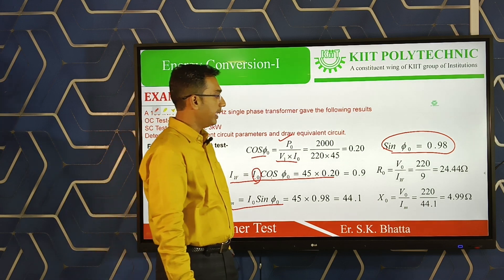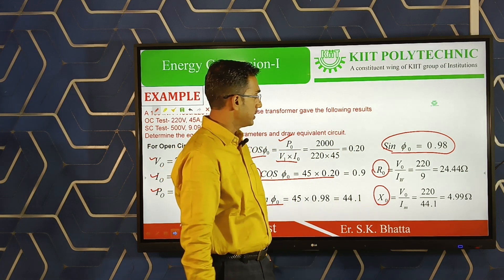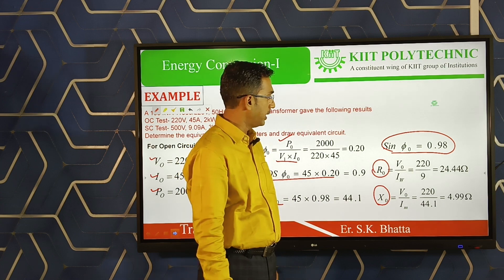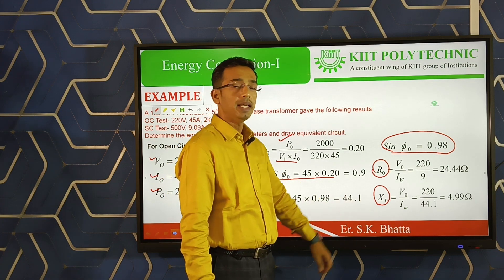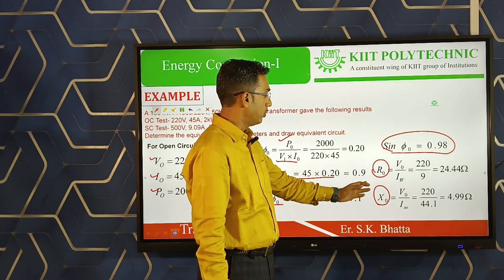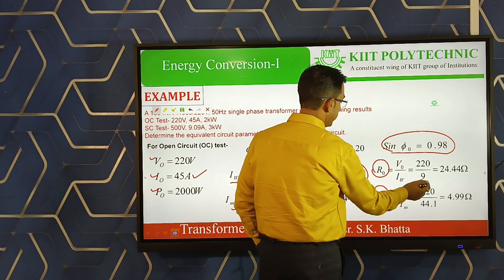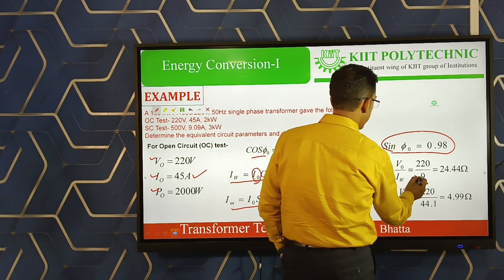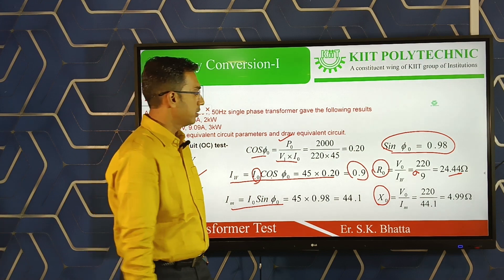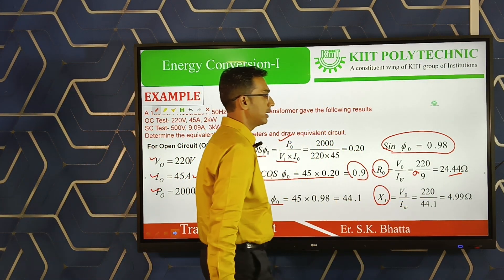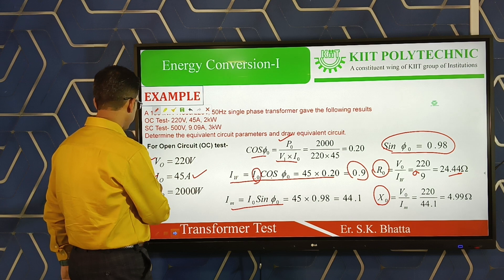With Iw and Im calculated, we find the shunt parameters: R₀ = V₀ / Iw = 220 / 9 = 244.4 Ω (approximately). X₀ = V₀ / Im = 220 / 44.1 = 4.99 Ω, approximately 5 Ω. These are the equivalent circuit parameters obtained from the open circuit test.